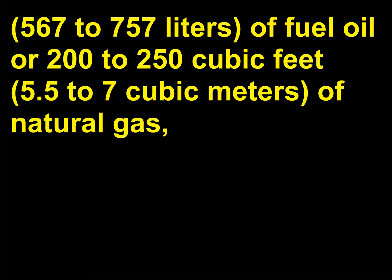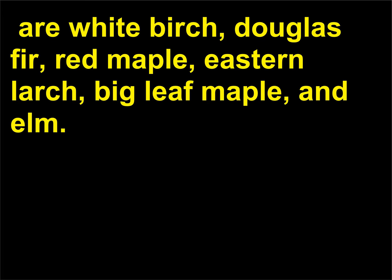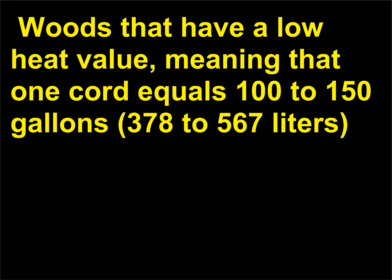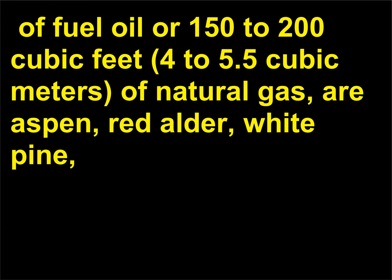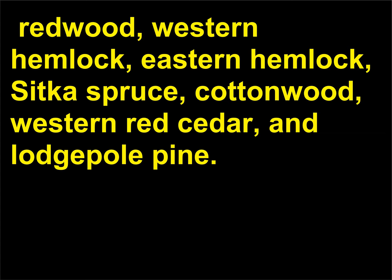Woods that have medium heat value mean one cord equals 150 to 200 gallons (378 to 567 liters) of fuel oil. Woods that have low heat value — meaning one cord equals 100 to 150 gallons of fuel oil or 150 to 200 cubic feet (4 to 5.5 cubic meters) of natural gas — include aspen, red alder, white pine, redwood, western hemlock, eastern hemlock, Sitka spruce, cottonwood, western red cedar, and lodgepole pine.